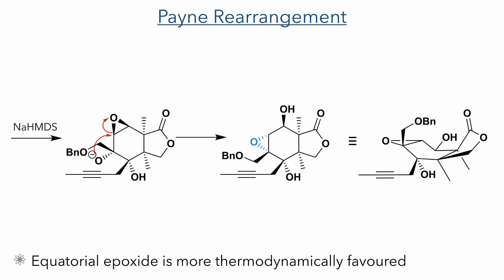The next reaction was a Payne rearrangement, promoted by sodium HMDS, which deprotonated the alcohol adjacent to the epoxide group. This acted as a nucleophile and attacked the epoxide to form a new epoxide and an alcohol. This reaction occurs because it produces an equatorial epoxide, which is more thermodynamically stable than the starting material.